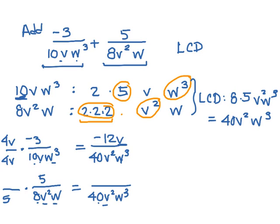I'm already set with my v squared, and over here, I only have one w, and I need to have 3, so I need to multiply it by w squared. That means I need to also multiply my numerator by 5w squared. That gives me 25w squared on top.